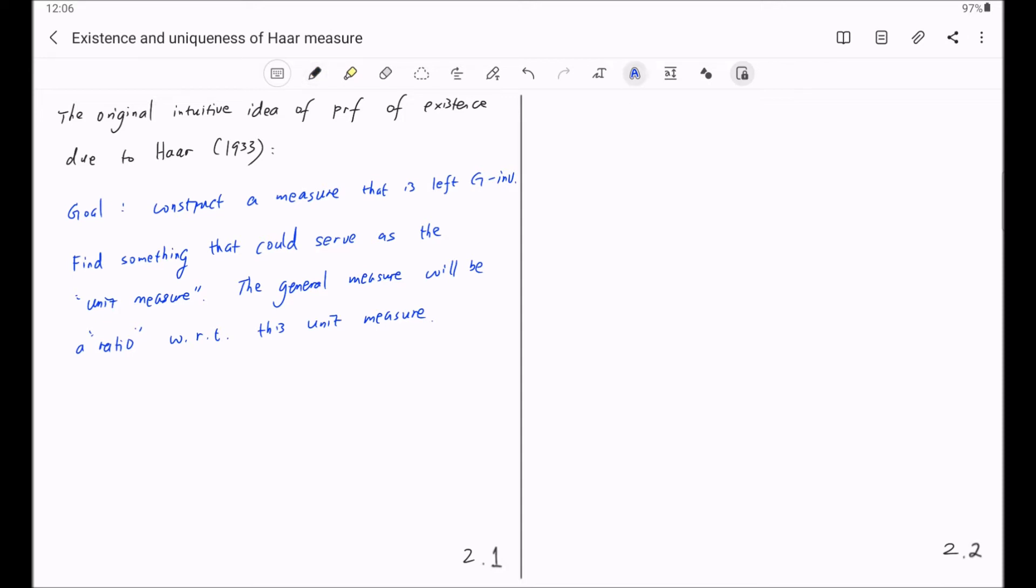Specifically, it is the following. If E is a Borel subset of G, and V is a non-empty open subset of G, let this quantity E:V denote the smallest number of left translations of V that cover E.